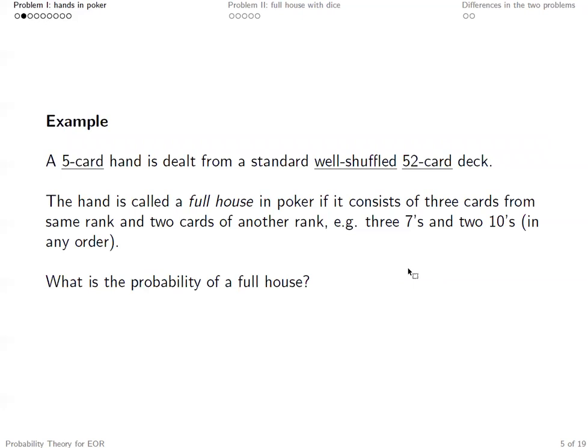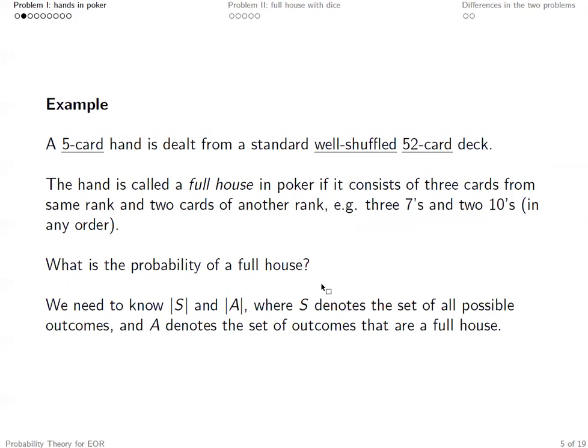We call a combination of five cards a full house if the five cards consist of three cards from the same rank and two cards of another rank. For example, three sevens and two tens in any order — so we don't care about order in this problem. The question is: what is the probability of a full house? To apply the naive probability, we need to know the number of all possible outcomes and also how many outcomes are in event A, where A denotes the set of outcomes that are a full house.